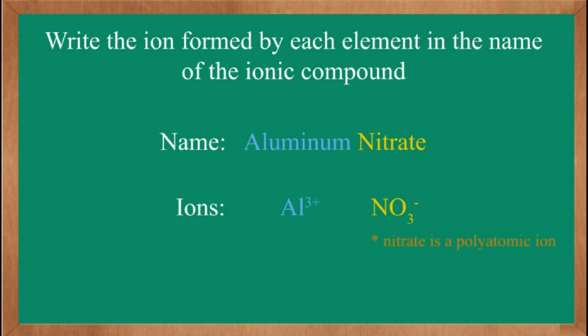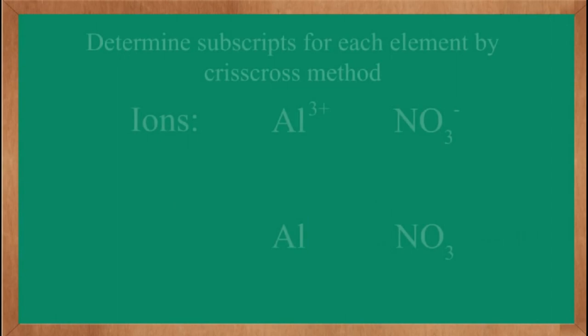Here we are taking aluminum nitrate. Aluminum ion is Al³⁺, and nitrate is NO₃⁻. Nitrate is a polyatomic ion, so it is NO₃⁻.